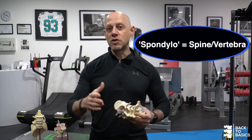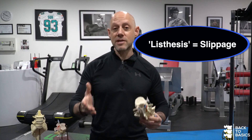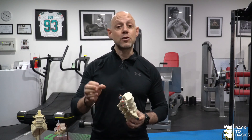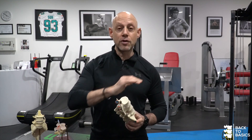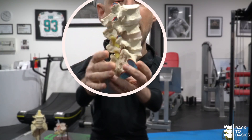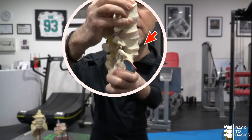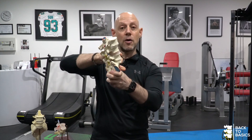Spondylolisthesis. If we break down the word, there are two words that make it up. The first is spondylo, which means spine or vertebra, and the second word is lysethesis, which means slippage. So essentially, a spondylolisthesis means that your vertebra has slipped forward above the vertebra below. Using this model, I'm going to show you here the L5 and the S1, and a spondylolisthesis is where the spine actually slips forward over the sacrum, and you have this deformity at the very lowest level.